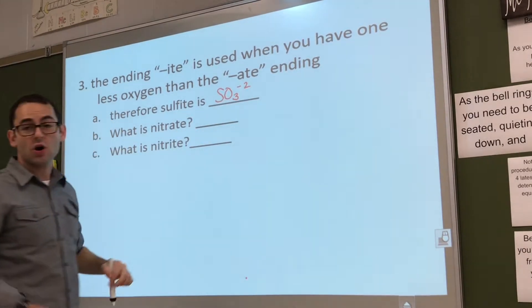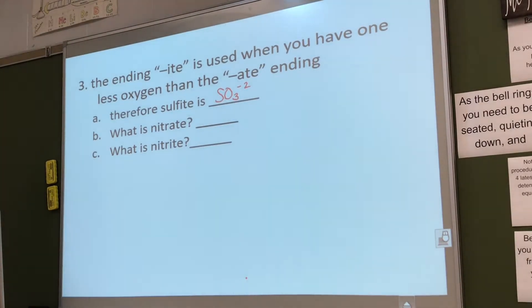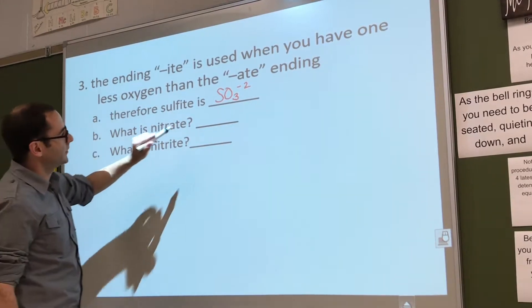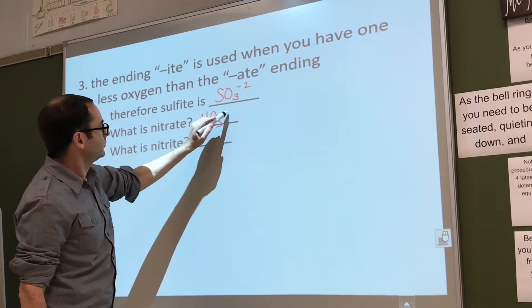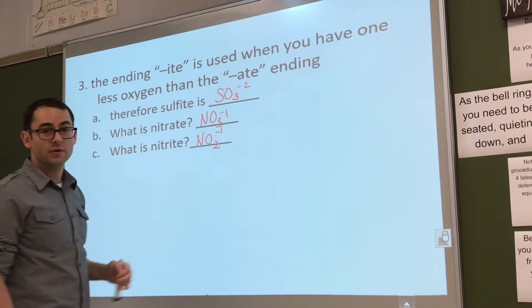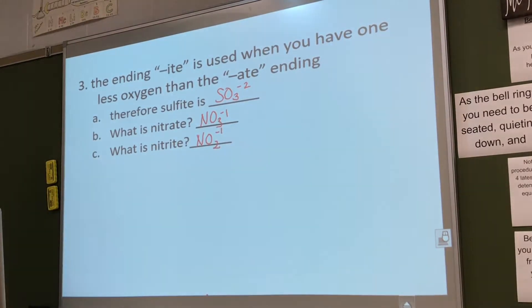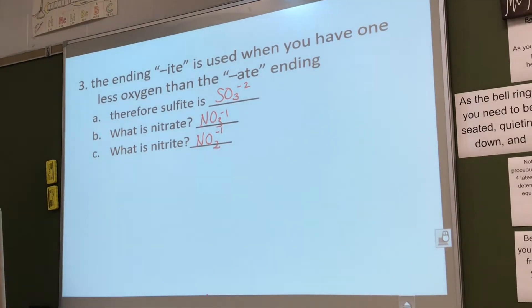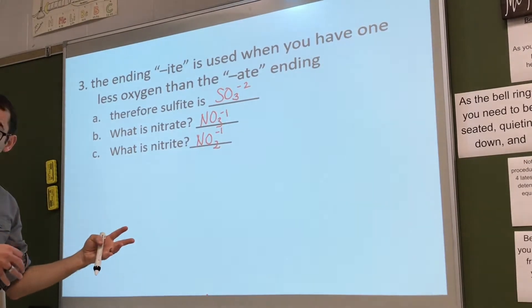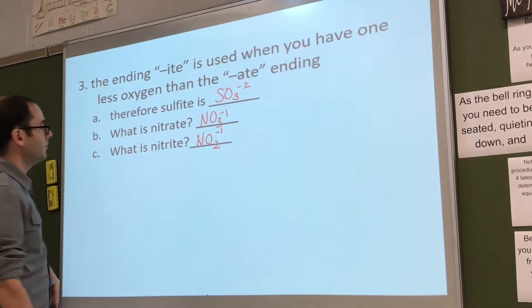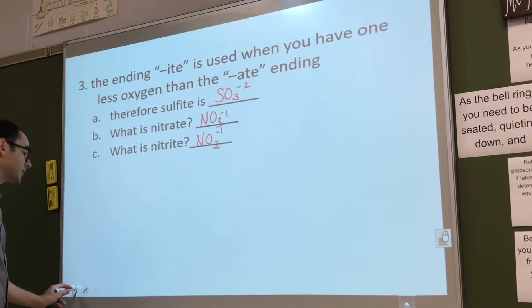Sulfite is SO3 minus 2. The charge doesn't change. The type of atom you're starting with, the sulfur, doesn't change. It's just the number of oxygens. So what's nitrate? NO3 minus 1. So what's nitrite? NO2 minus 1. Are you starting to see why you need to know them really well? Now we went from 16 to almost 32 polyatomic ions, because you can do this for almost any of them. Phosphate, PO4 minus 3. Phosphite, one less oxygen, PO3 minus 3. So 32, not a big deal.